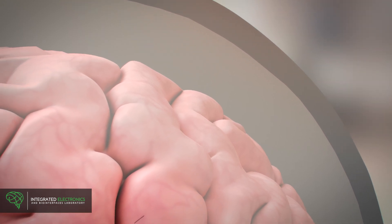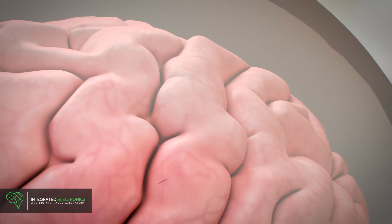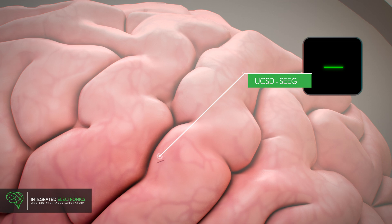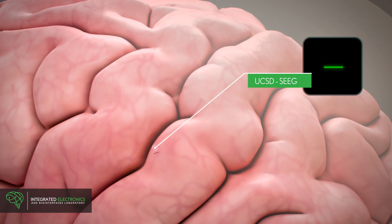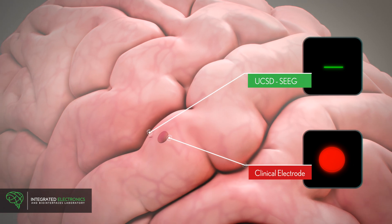When recording and stimulation are complete, it can be easily removed perfectly intact due to its robust material properties. Because the UCSD-Micro-SEEG is very thin, the incision it makes in brain tissue is much smaller than those made by current clinical electrodes.